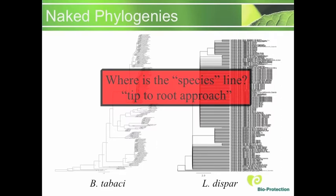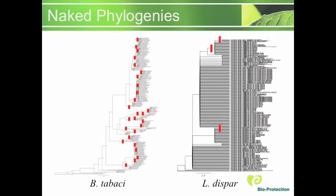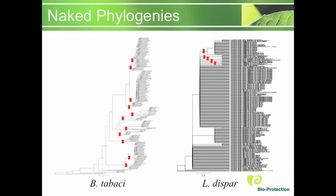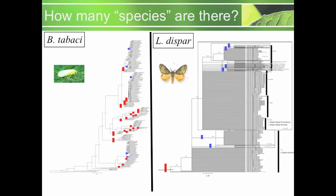We then took our naked phylogenies and used our tip-to-root approach, starting at the tips and working our way back, asking along the way where there is taxonomic distinctiveness. The results are indicated by blue hashes. We identified five additional areas for Bemisia tabaci on the left and six on the right for Lymantia dispar.